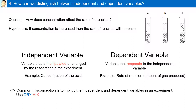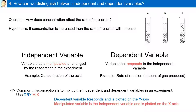A common misconception is mixing up the independent and dependent variables. However, using the mnemonic DRYMIX, we can solve this. DRY: the Dependent variable Responds and is plotted on the Y-axis. MIX: the Manipulated variable is the Independent variable and is plotted on the X-axis.